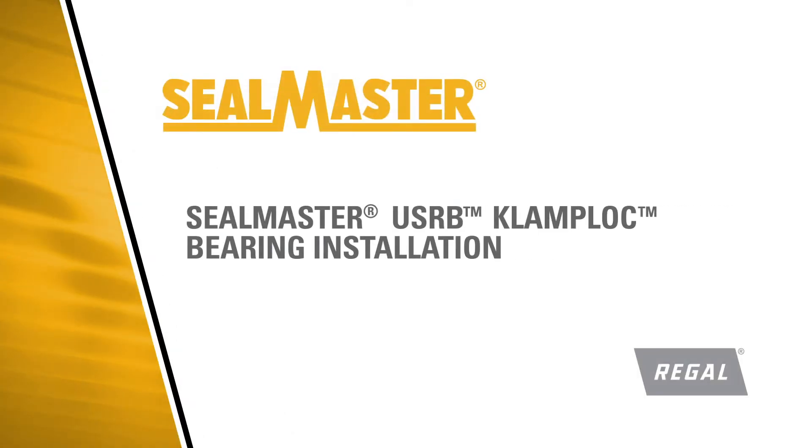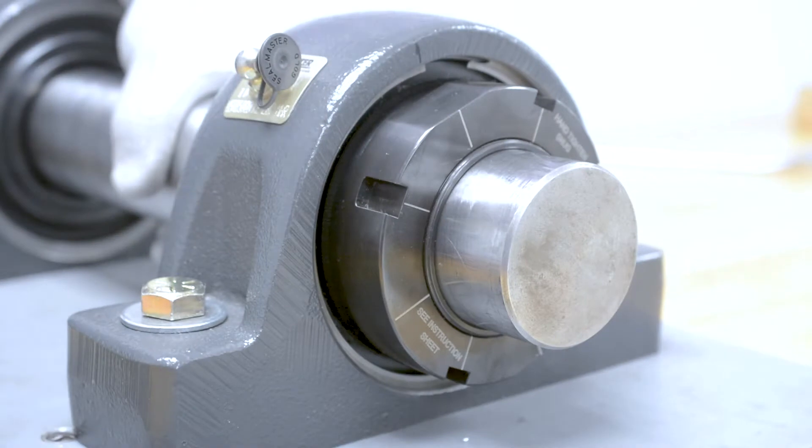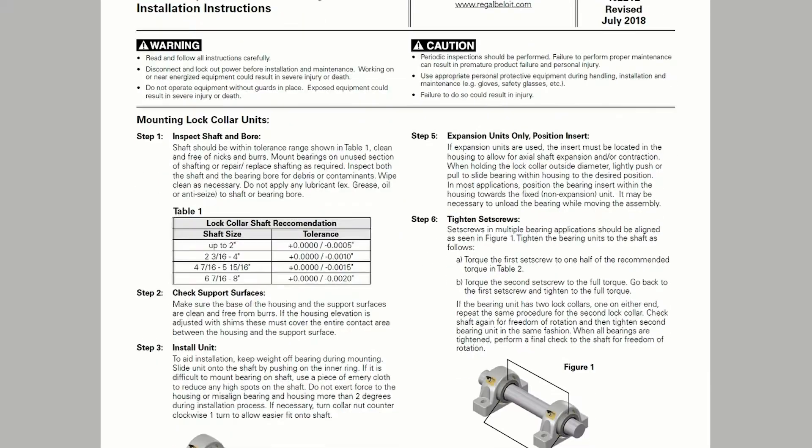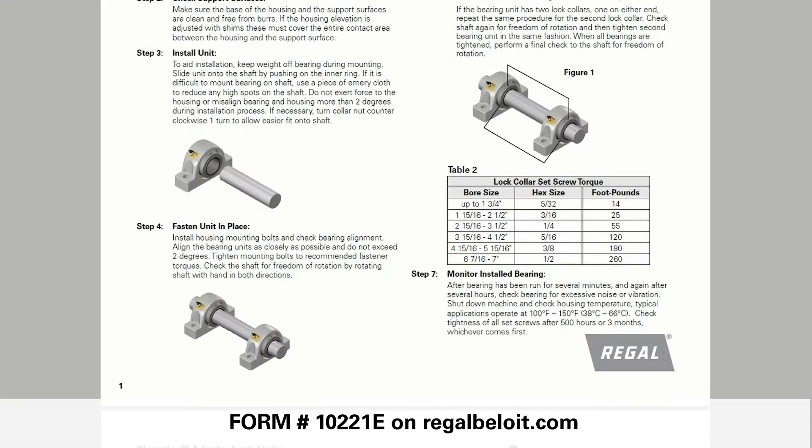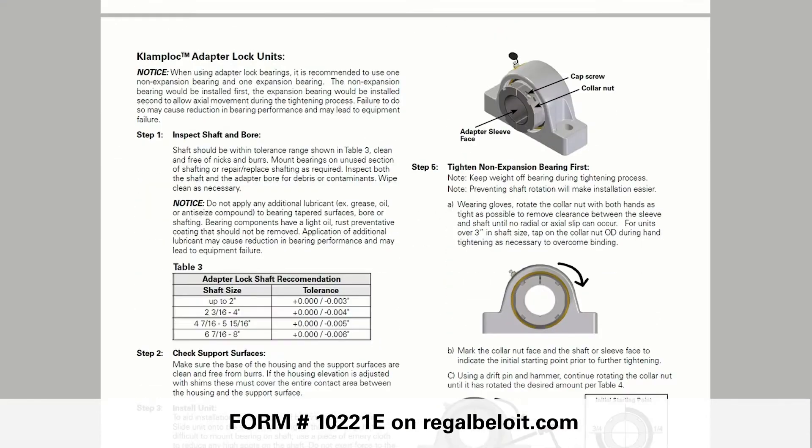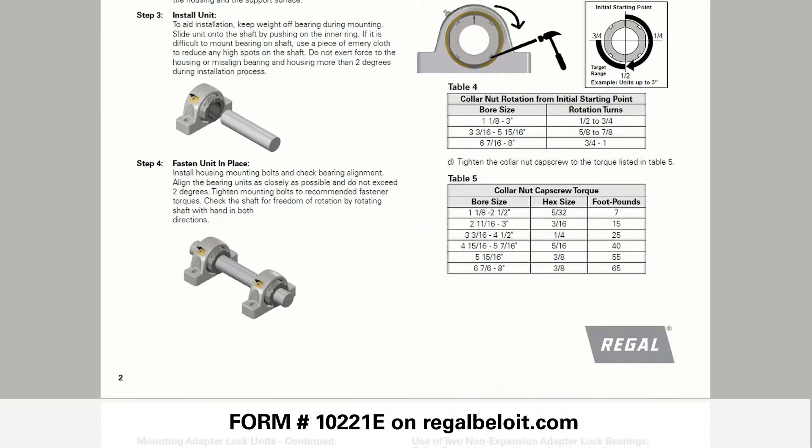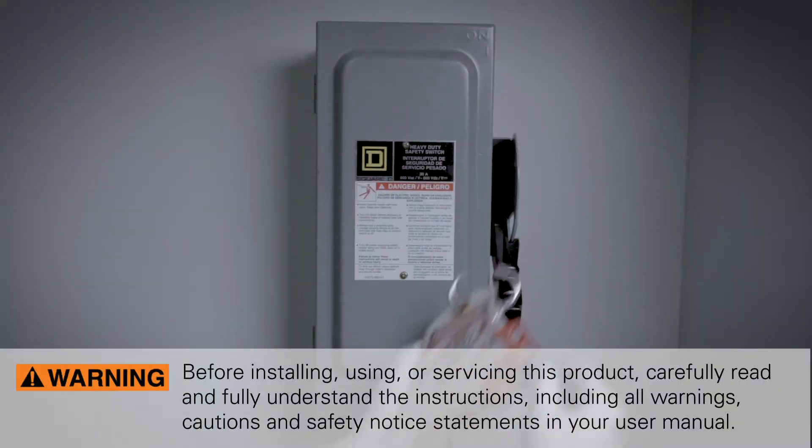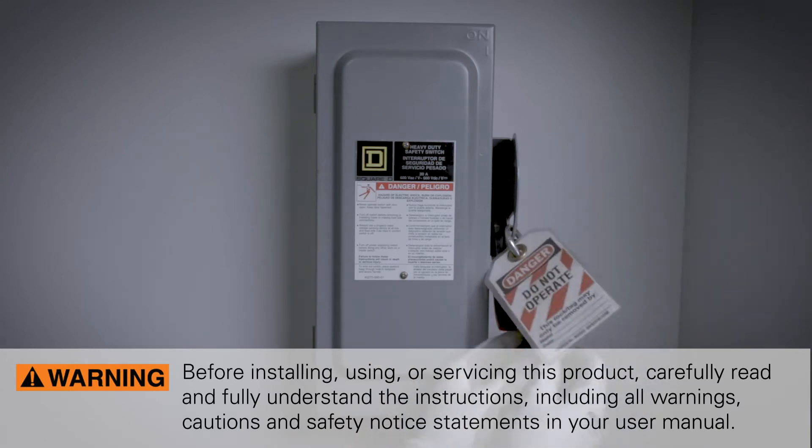In this video, we will review proper installation of a USRB clamp lock adapter lock bearing. Before attempting installation, be sure to read installation form 10-2-2-1-E found at the regalbeloit.com website. Always use proper personal protective equipment and follow proper lockout-tagout procedures prior to attempting an installation.